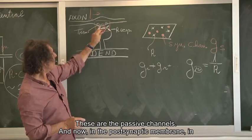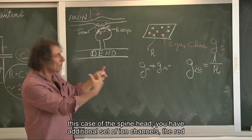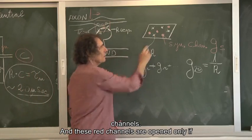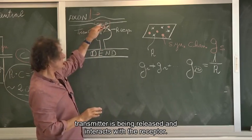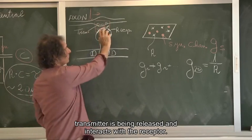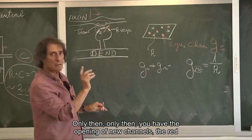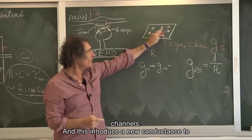And now, in the postsynaptic membrane, in this case of the spine head, you have additional set of ion channels, the red channels. And these red channels are opened only if the transmitter is being released and interacts with the receptor. Only then, only then, you have the opening of new channels, the red channels.